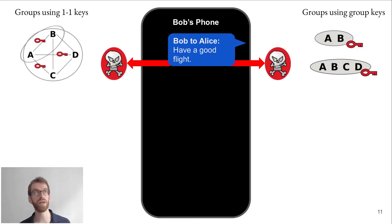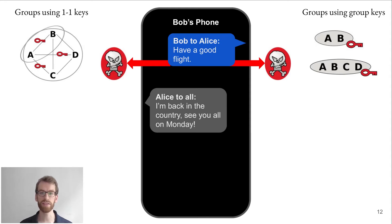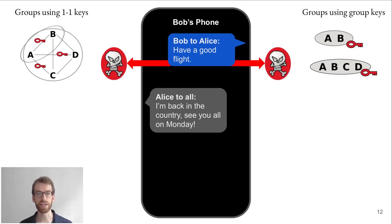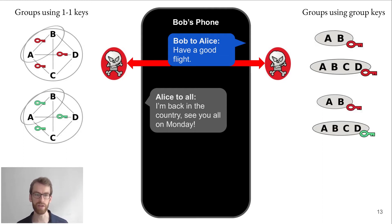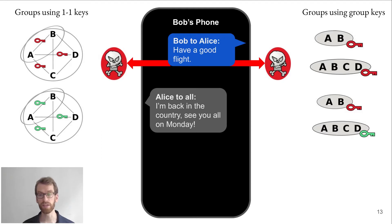For the purpose of this example, we assume that with each message comes an update. So upon the next message that Alice sends to everyone — the group consisting of A, B, C, and D — she is actually also sending an update to that group. As a consequence, on the left side, since that group uses all the individual channels between A and B, A and D, and A and C, all of the keys have turned green because of that update. Similarly, on the right side, the key representing the group A, B, C, and D has also turned green.